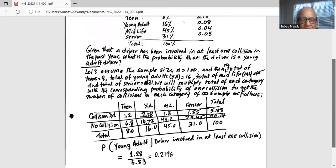Now we are required to find out what is the probability of young adult, given the driver was involved in at least one collision. So the total number of collisions, at least one, is 5.83, out of which 1.28 comes from young adult. So the conditional probability of a young adult given driver involved in at least one collision is 1.28 divided by 5.83, which is 0.2196.